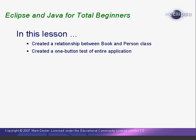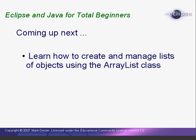In this lesson, we've created a relationship between the Book and Person class, and we've created a one-button technique for testing our application. In the next lesson, we'll learn how to create and manage lists of objects using the Java ArrayList class. This is the end of Lesson 8. I'm Mark Dexter — so long for now.